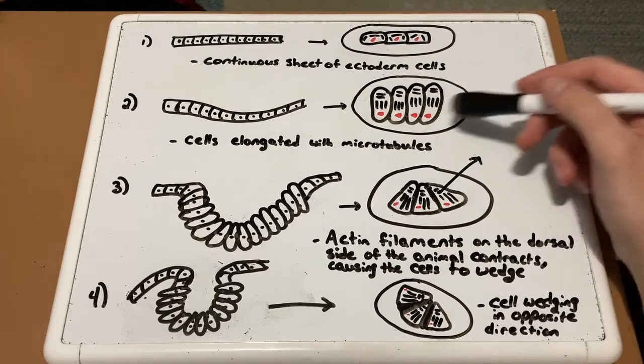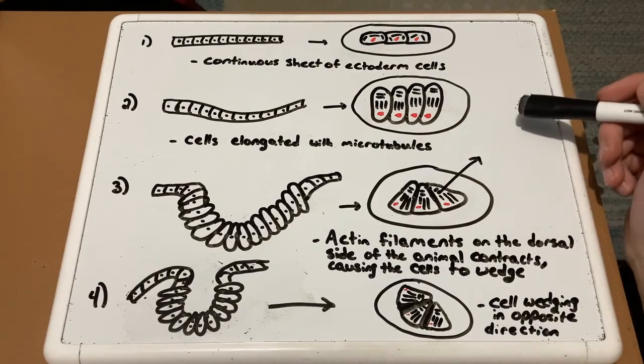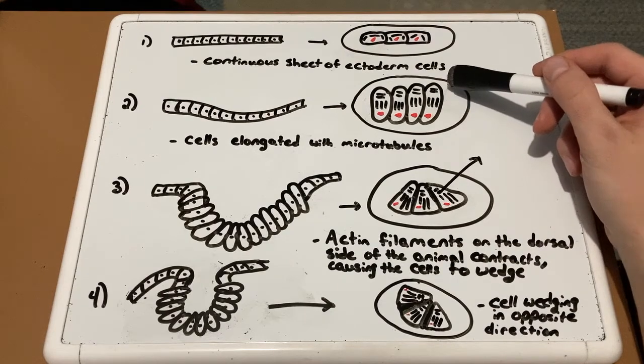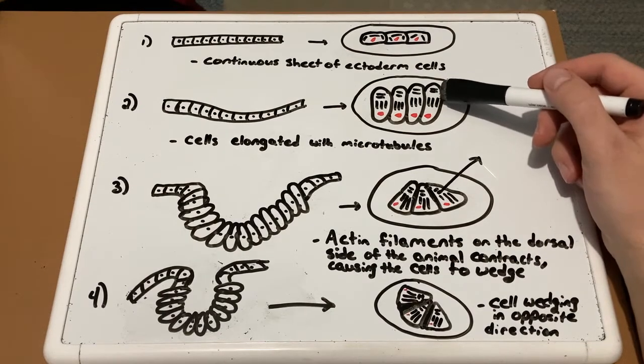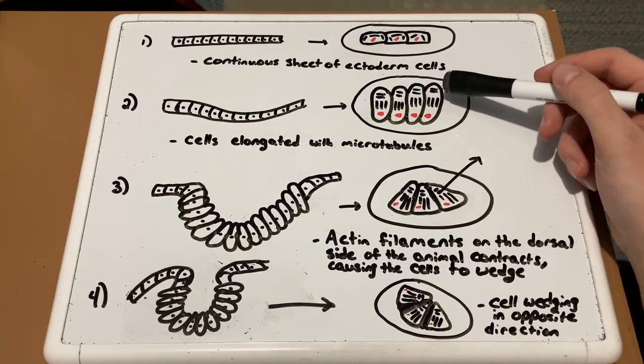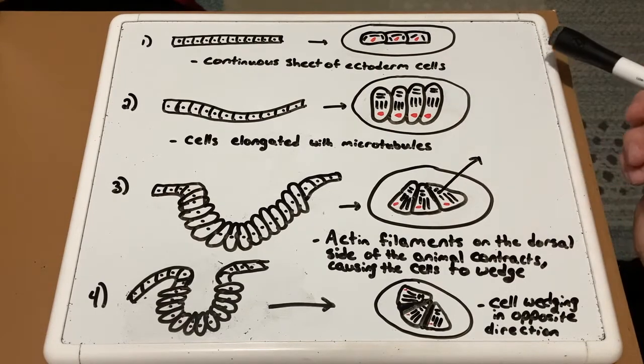You're going to see that in the close-up that the cells have elongated with microtubules. So the microtubules are here, actin filaments are up top. And what happens is the microtubules have extended or got longer. And because of this, the cell in whole has gotten longer.